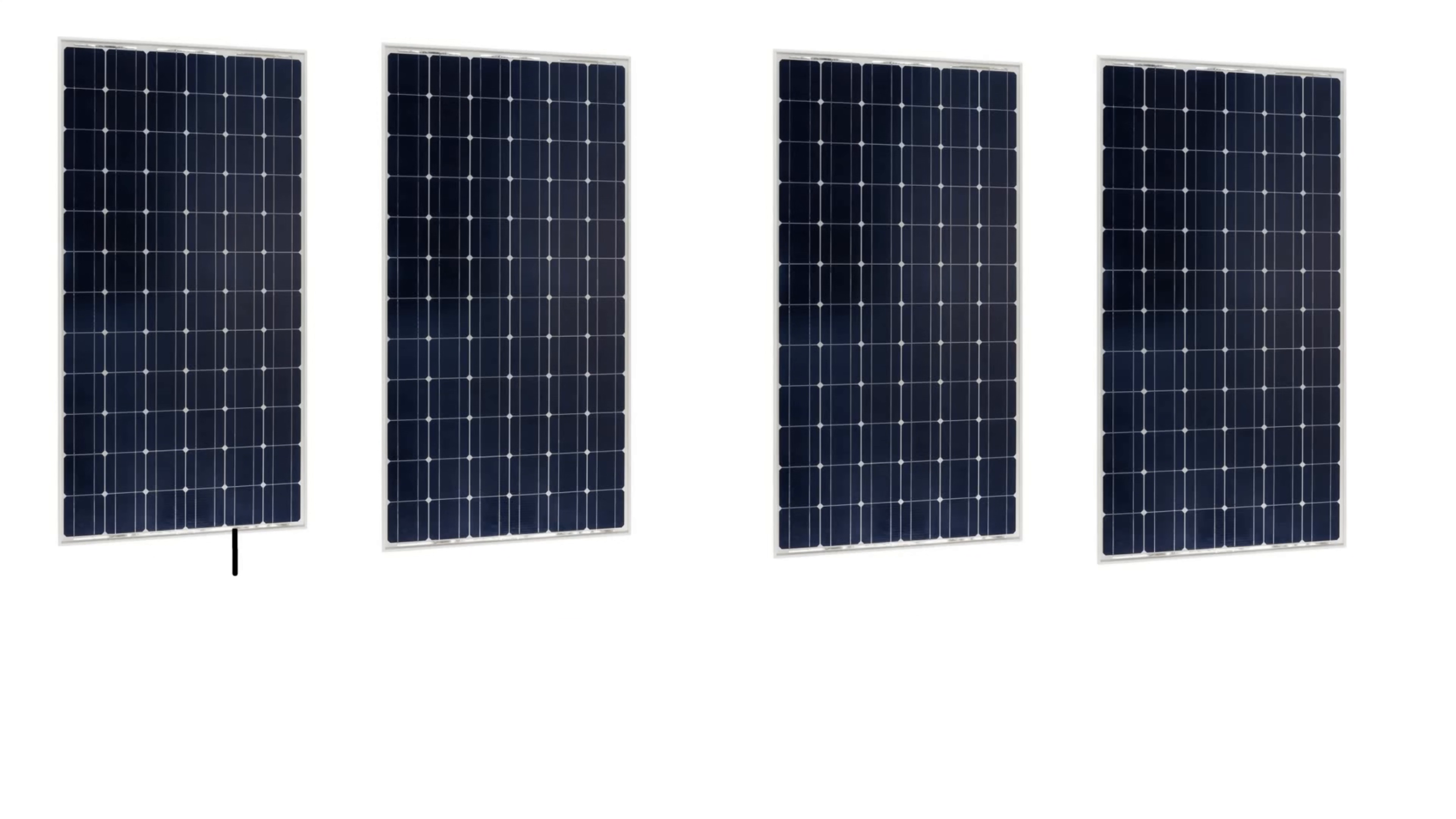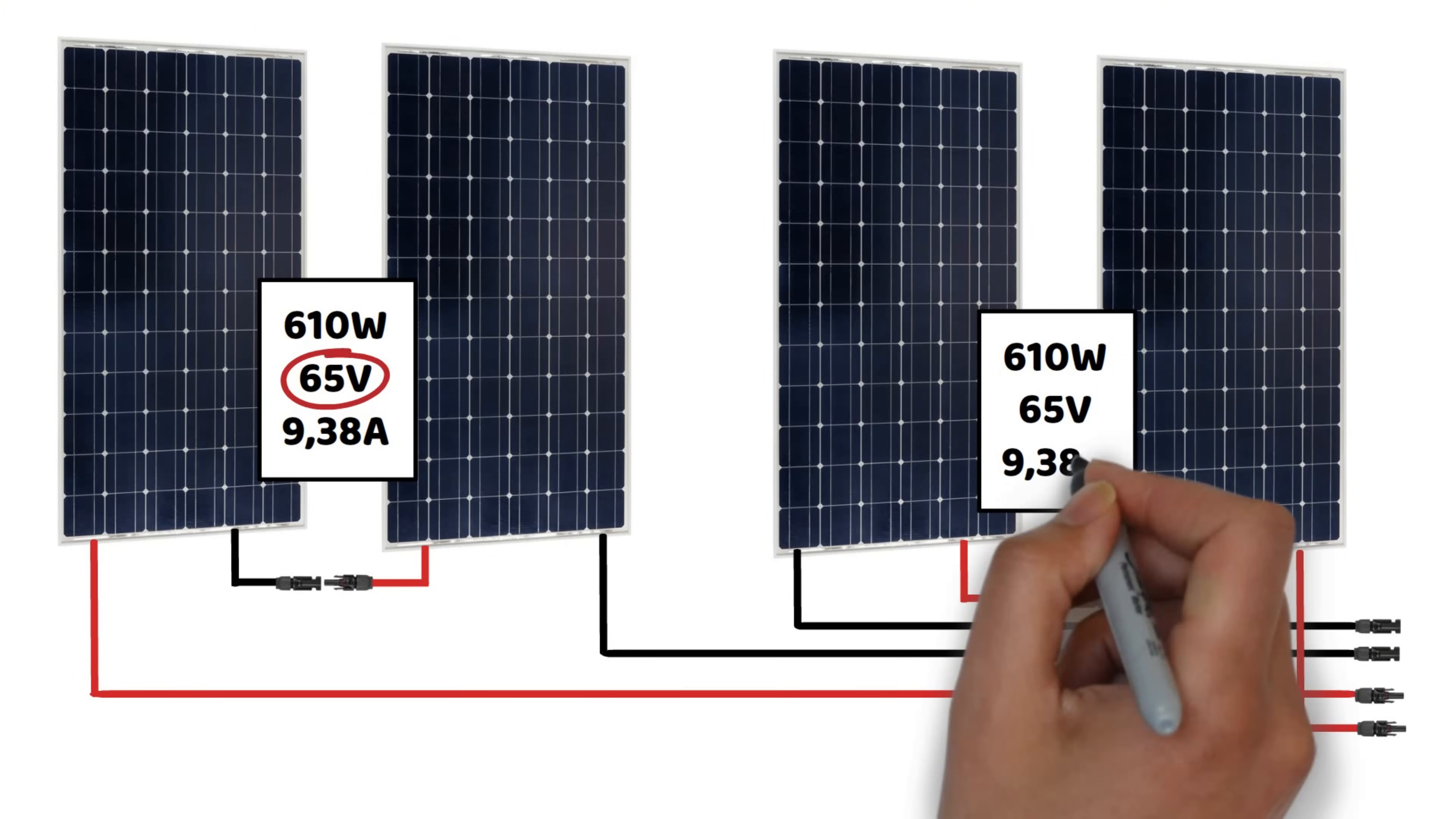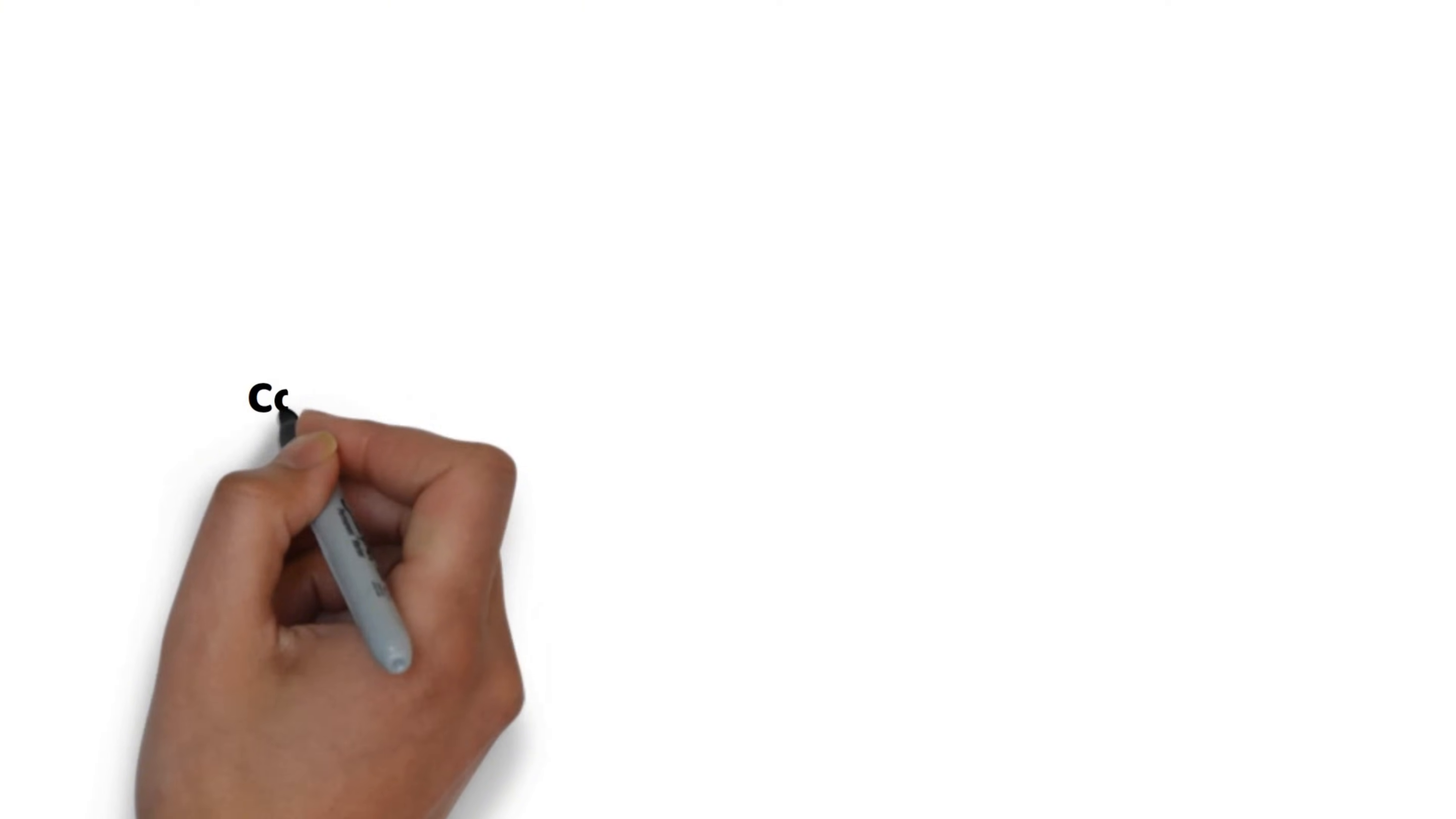We also covered the mixed series parallel configuration. For this example, we'll use four panels to make it clearer. Here, we'll have two pairs of panels connected in series, and then these two sets will be connected in parallel. Let's stick with the same panels as before. In this setup, we'll have 32.5 volts plus 32.5 volts, resulting in 65 volts with a current of 9.38 amps and a power of 610 watts for each series connected pair. The same will apply to the second set, as we are still using identical panels. Now, when we connect these two sets in parallel, the voltage will remain unchanged at 65 volts, while the current will increase from 9.38 amps to 18.8 amps. This will give us a total power of four times 305 watts, or 1220 watts. You can use connectors here, since the current is still relatively low, or you can opt for bus bars. Once again, if you'd like to better understand the advantages and disadvantages of series versus parallel connections, I encourage you to check out my previous video on the channel.